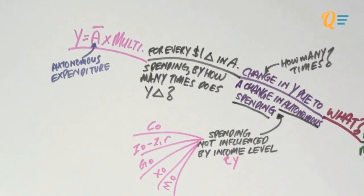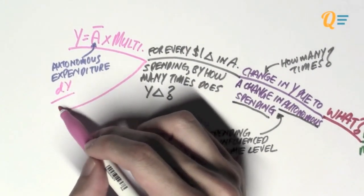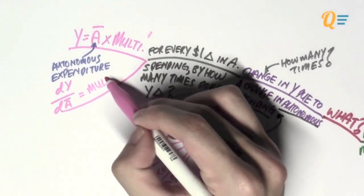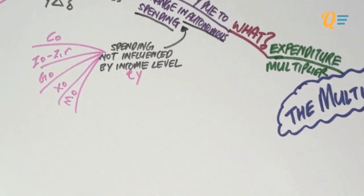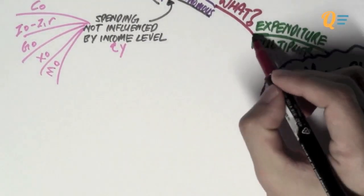So, in other words, to calculate your expenditure multiplier, you simply have to differentiate Y with respect to autonomous multiplier, right? And since the multiplier has a power of 1, so when you differentiate Y with respect to A bar, you simply get the multiplier. So, that is how you calculate the multiplier.